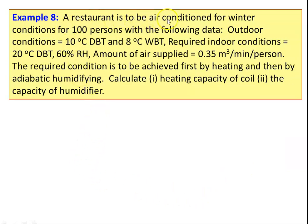Problem number 8: a restaurant to be air conditioned for winter conditions for 100 persons. Outdoor conditions: 10 degree Celsius dry bulb and 8 degree Celsius wet bulb temperature. Required indoor conditions: 20 degree Celsius dry bulb and 60 percent relative humidity. Amount of air supplied is 0.35 cubic meter per minute per person. The required conditions are achieved first by heating and then by adiabatic humidification.